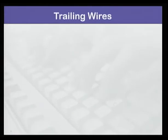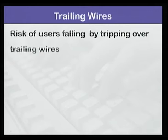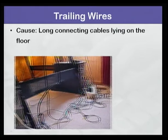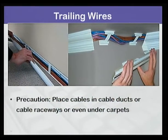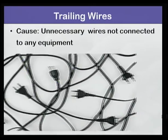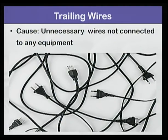The next hazard is that of trailing wires. Users run the risk of falling by tripping over trailing wires. Sometimes you have long connecting cables lying on the floor, so the precaution is to place cables in cable ducts or cable raceways, as you can see in the picture. You can even put cables under carpets. Another cause is that there are too many unnecessary wires not connected to any equipment lying on the floor. In this case, remove wires that are not required.